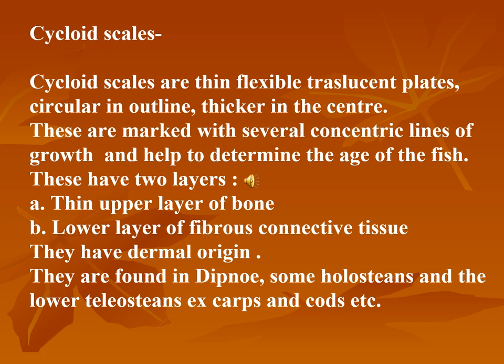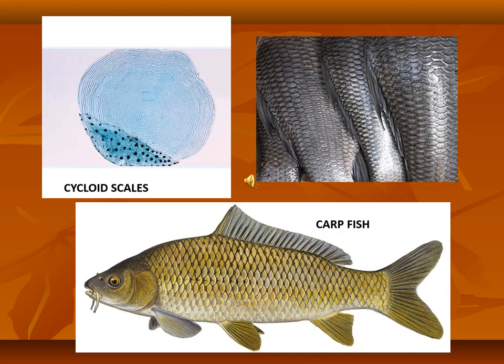Cycloid scales are thin, flexible, translucent plates, sometimes circular in shape, thicker in the center, and marked by several concentric lines of growth, with which we can determine the age of fishes. Cycloid scales are composed of a thin upper layer of bone and a lower layer of fibrous connective tissue. They overlap each other and each scale is embedded in a small pocket of dermis. Cycloid scales are found in lungfishes, some holosteans, and lower teleosteans such as carp and cod.